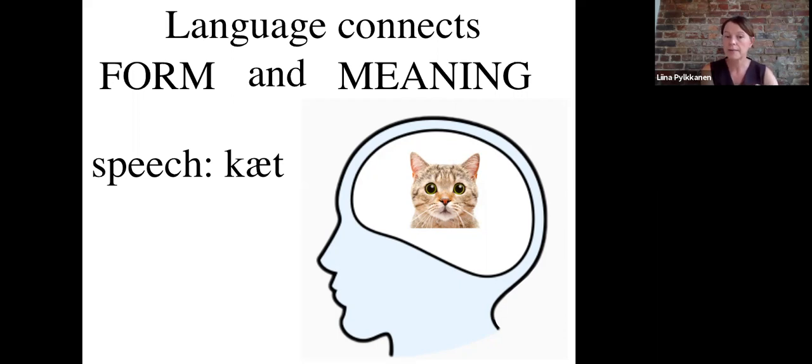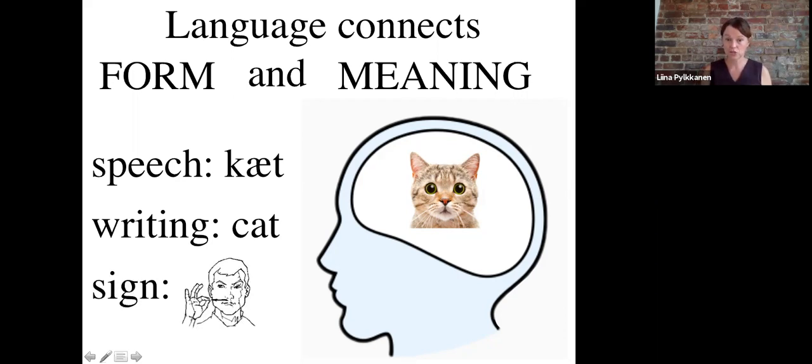What's really important to always remember is that speech is not the only externalization of language. Another externalization of language is, of course, writing. So there's a relationship between the written form and the phonological form that's quite transparent here, but this is another way to externalize language. And then there are others. For example, instead of speech we could be using sign language; instead of this kind of writing we could be using braille, and so forth. That's why we say language connects form to meaning, as opposed to saying language connects speech to meaning. So language and speech are different—two different things. Speech is just one way to externalize language.